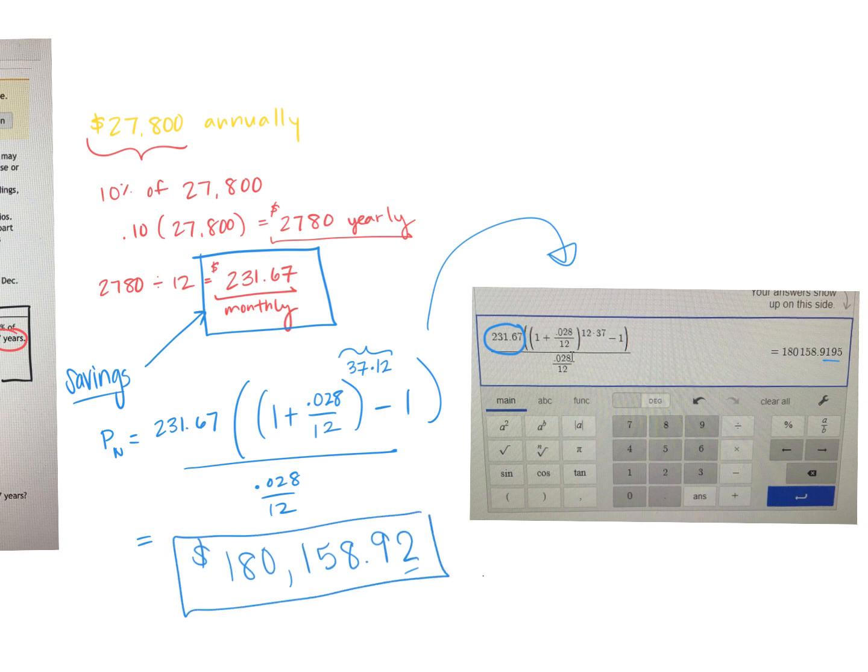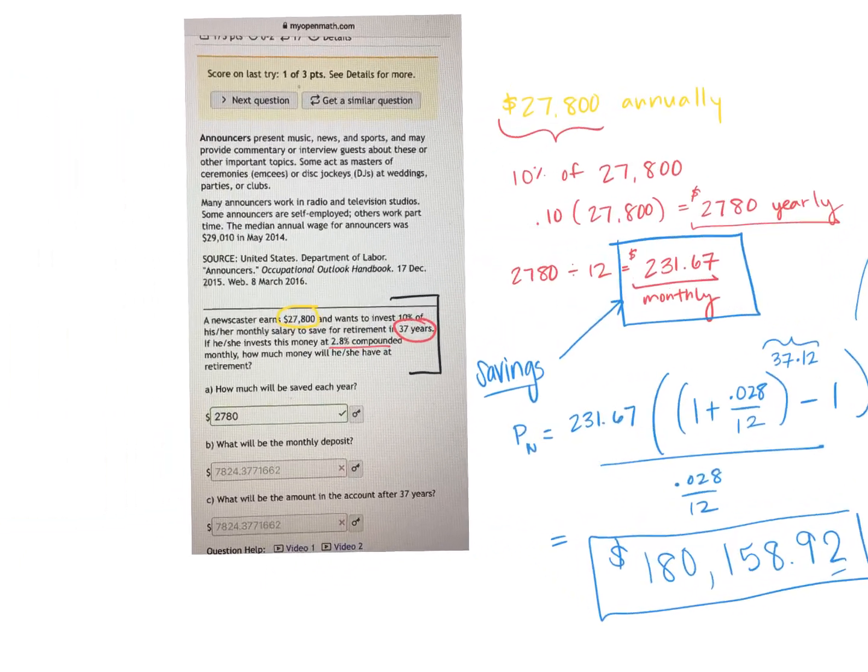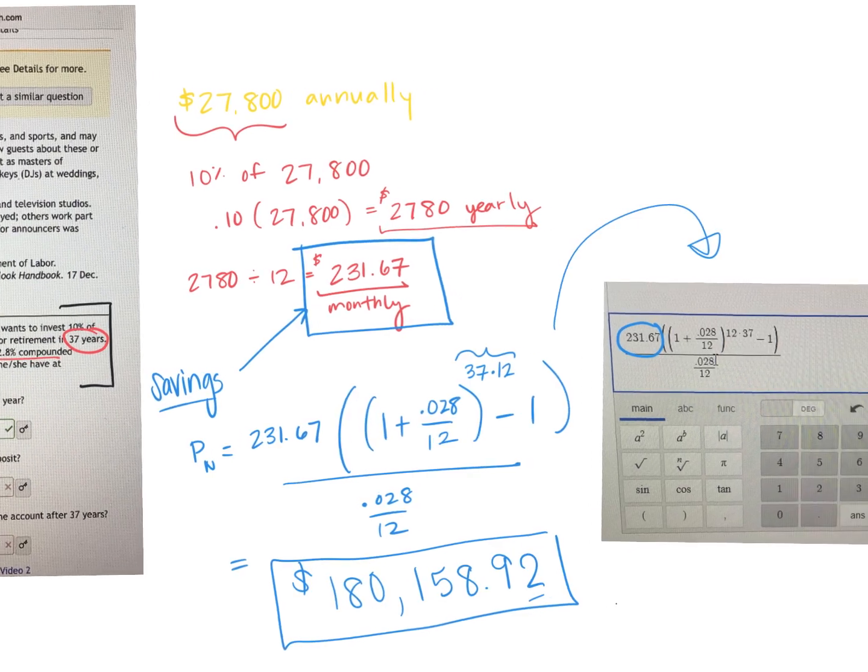And that would be, again, that future value of that amount of money that he has after those 37 years of savings. So hope that helped.